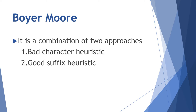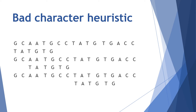Next is Boyer-Moore. It is a combination of two approaches: one is bad character heuristic and another is good suffix heuristic. For bad character heuristic, the text is G C A A T G C C T A T G T G A C C and the search pattern is T A T G T G.